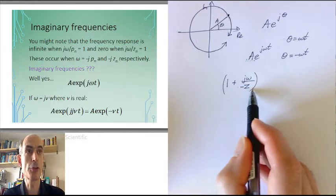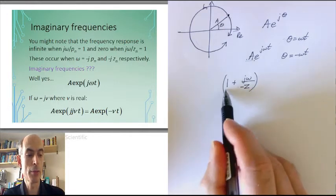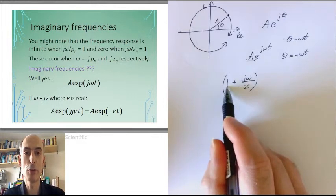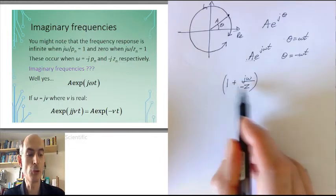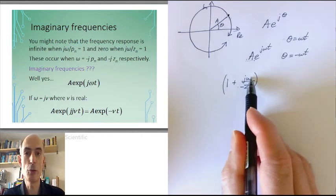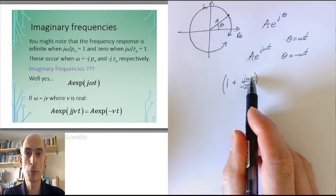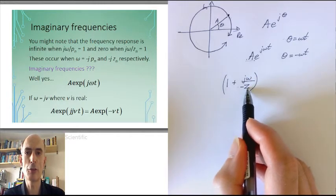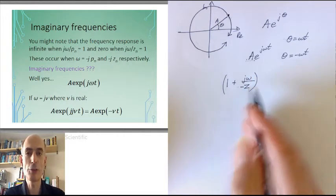And if we're going to add this term to one, then this term cannot have any units. One doesn't have any units, and you can only add two quantities if they have the same units. Well, j omega has units of frequency, radians per second in this case, so z must have units of radians per second as well. So z is a frequency.